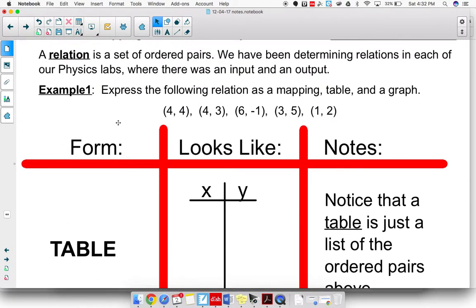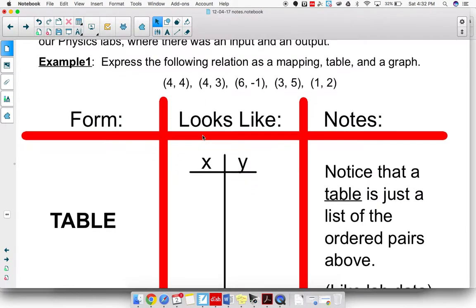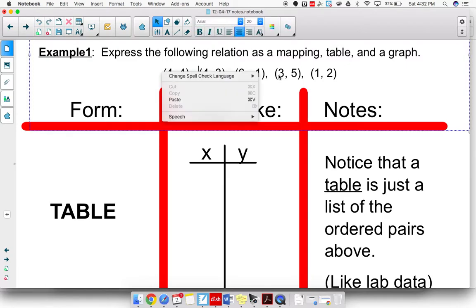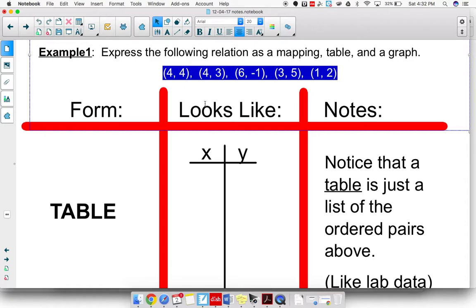And so for this first example, what we're going to do is just take this relation and represent it really three different ways. So again, these highlighted sets of ordered pairs here, we're going to consider that our relation.